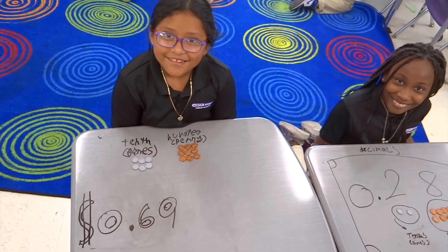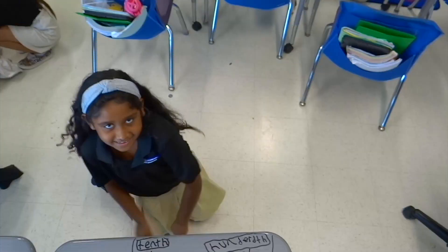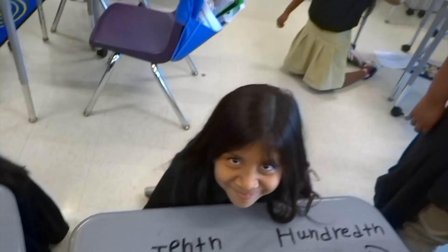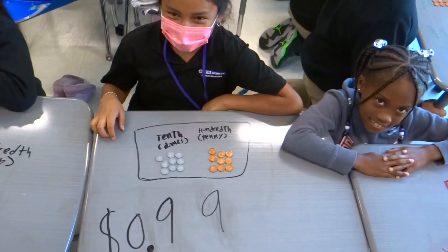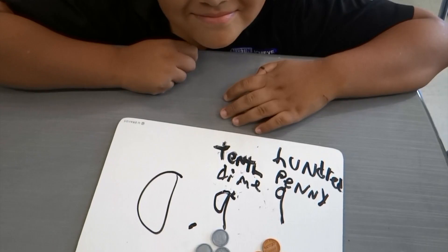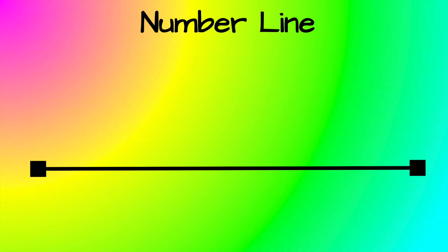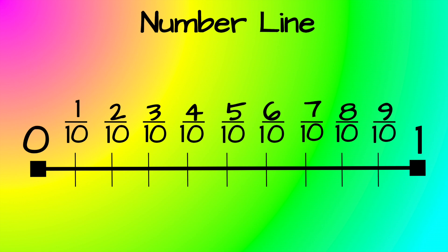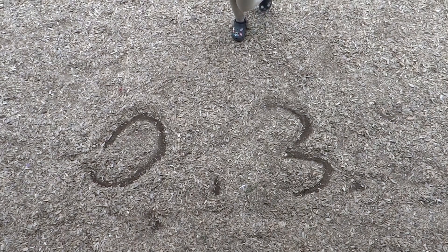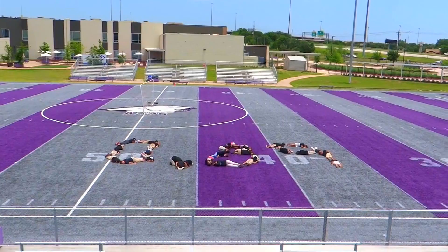Decimals! Number line decimals — here we go. Make equal parts and start at zero, like a fraction with ten parts in the whole. Any number in between is a decimal. There's three tenths — yeah, we see. Now seven tenths decimal, easy.